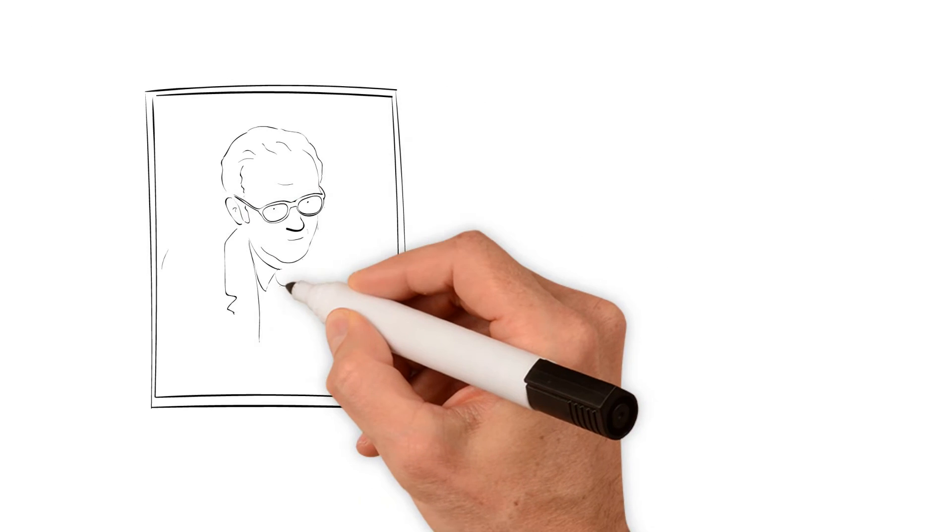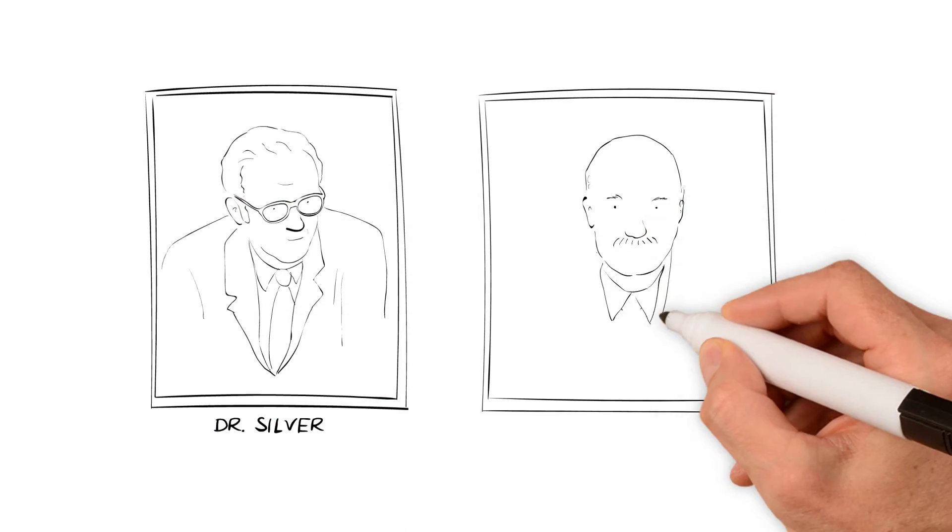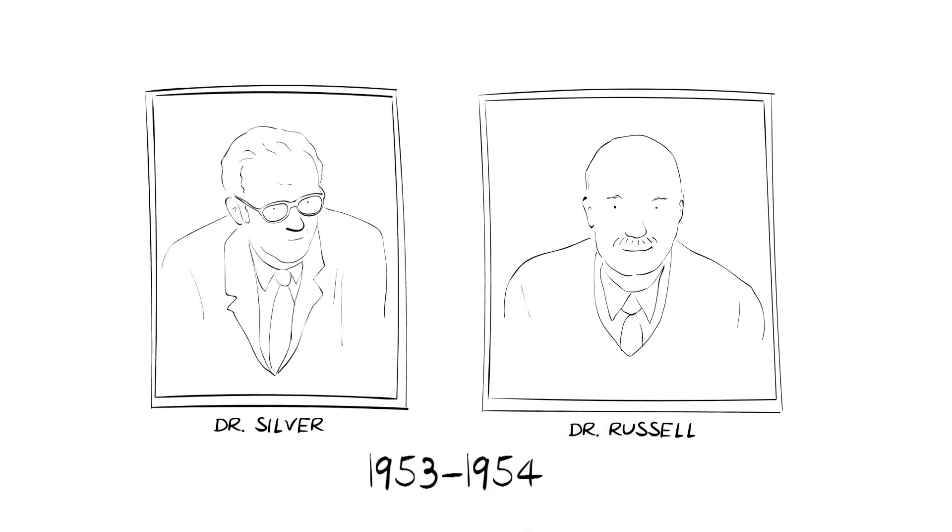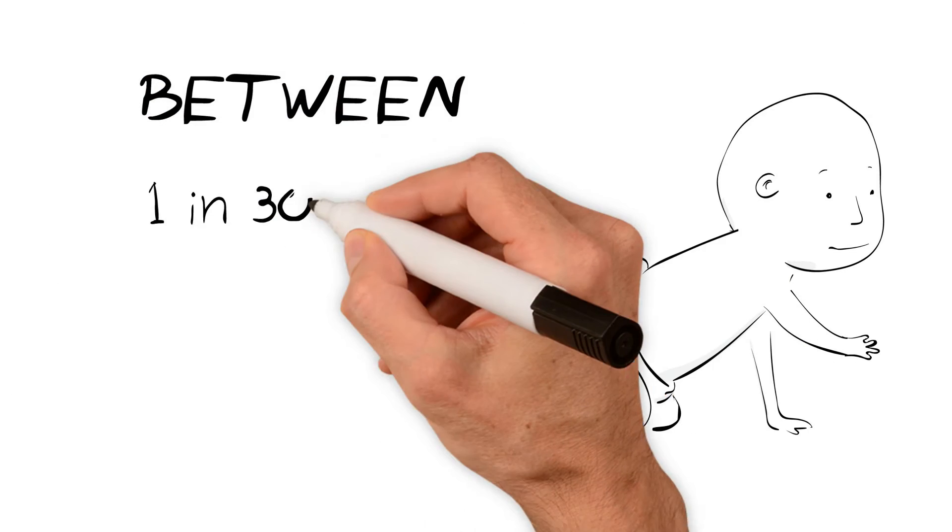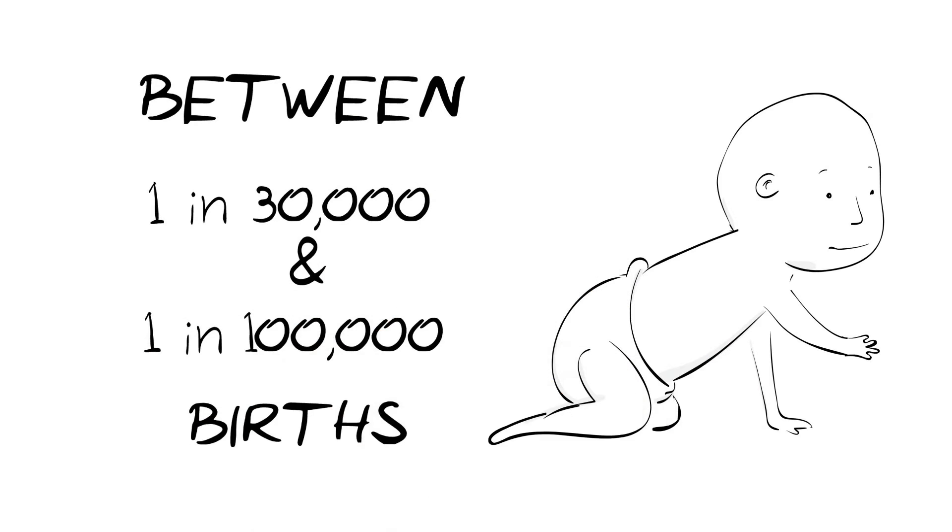The condition is named after Dr. Silver and Dr. Russell, who first described the syndrome in the 1950s, and it is thought to occur in between 1 in 30,000 and 1 in 100,000 births.